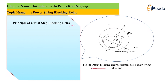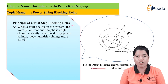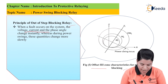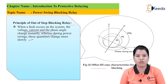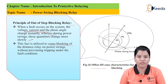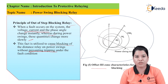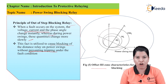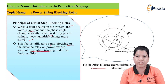Now let us study the principle of the out-of-step blocking relay. The diagram shows offset three-zone characteristics for power swing blocking. When a fault occurs on the system, voltage, current, and phase angle change instantly, whereas during power swings these quantities change more slowly. This fact is utilized to cause blocking of the distance relay during power swings without preventing tripping under fault conditions, since power swing is not considered a fault condition.